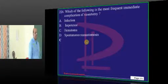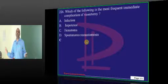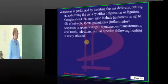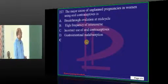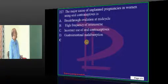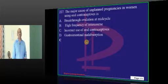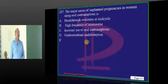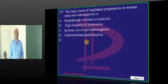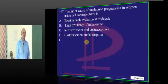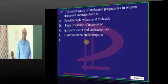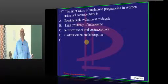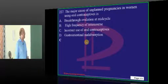Now, with vasectomy, what is the most common complication? Hematoma is the most common problem. Coming to unplanned pregnancies in spite of taking OCPs — what is the reason? Incorrect usage of OCPs is one of the most important underlying causes.